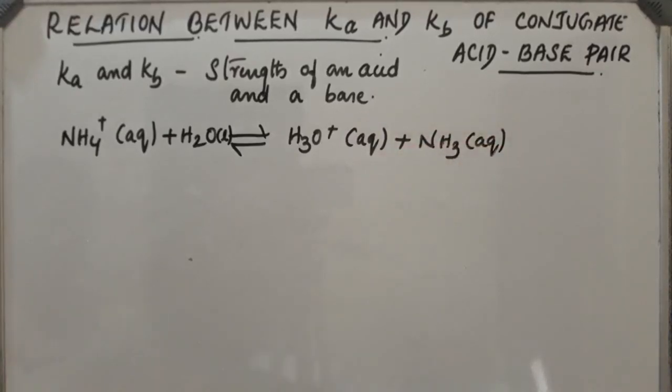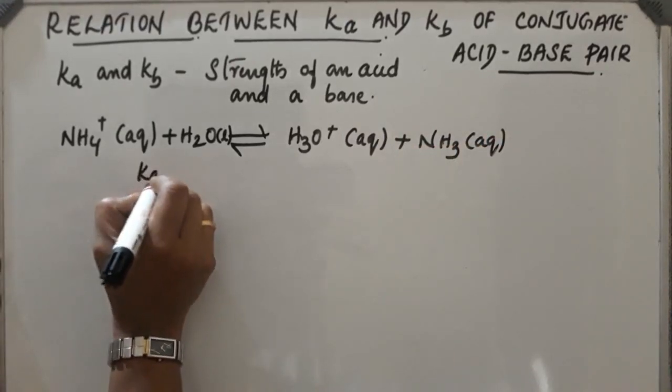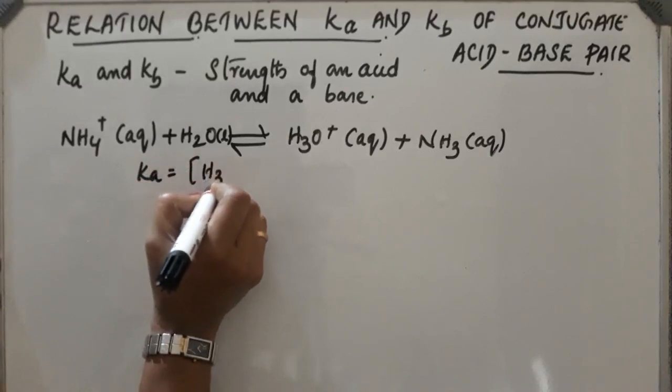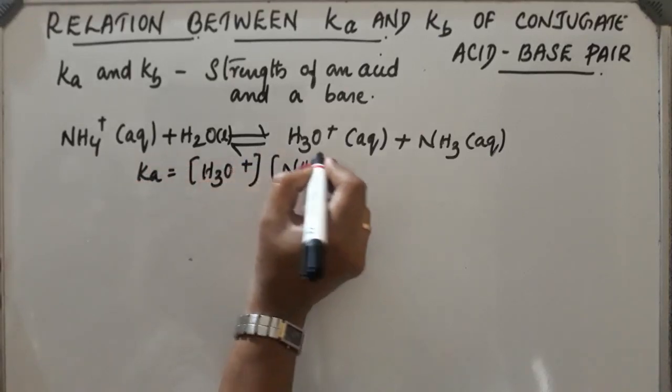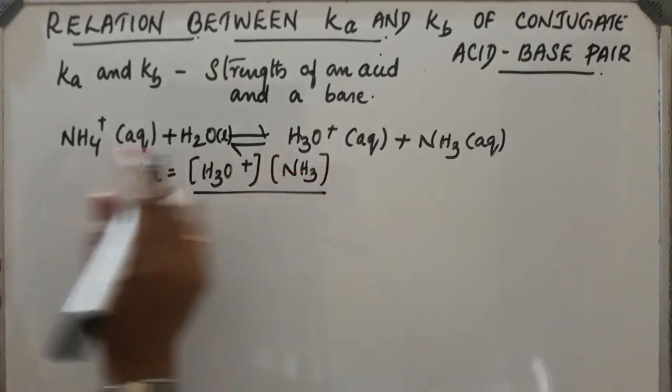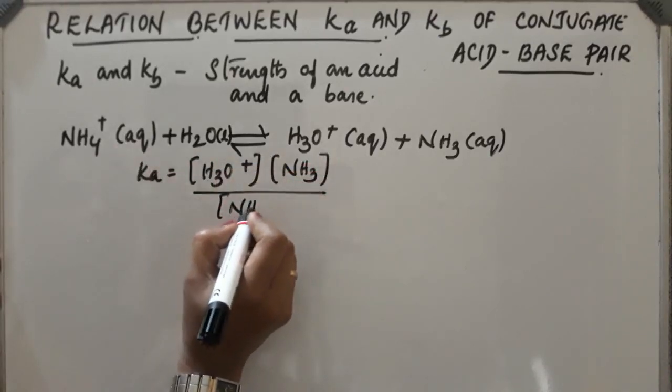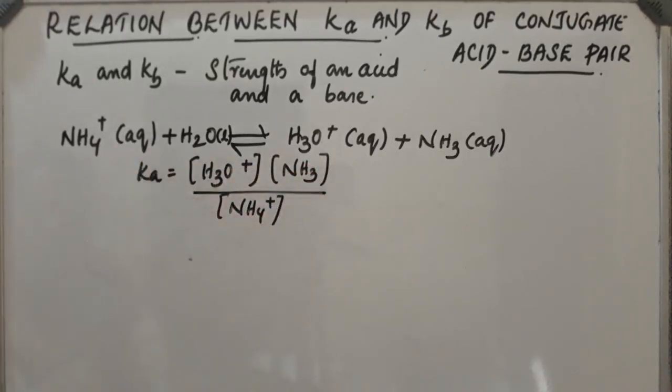Here NH4+ and NH3 are conjugate acid-base pair. So Ka will be equal to [H3O+][NH3] by [NH4+]. This is the product, so Ka will be this.